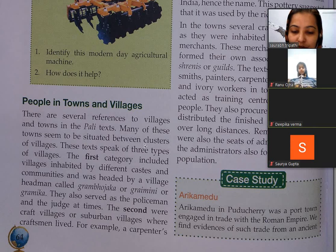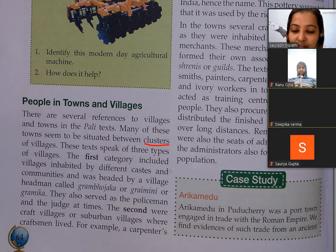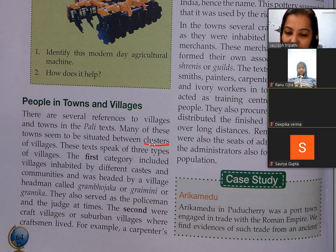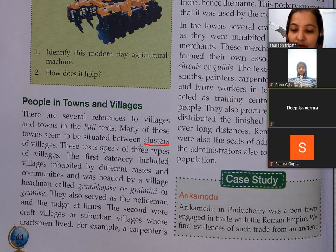Clusters means group — jhund. Many of these towns seem to be situated between clusters of villages — bahut saare villages ke beech mein towns the. These texts speak of three types of villages.